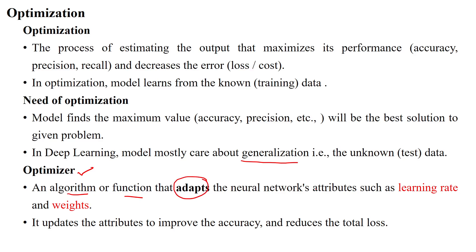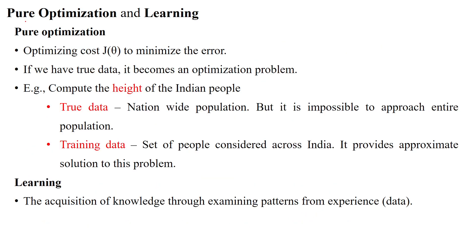The optimizer adapts neural network attributes such as learning rate alpha, weights, and bias. These weights and learning rates are continuously updated for a given number of epochs until we achieve maximum accuracy and precision by decreasing the error. This updating of weights, learning rate, and bias improves the accuracy and decreases the cost. One important term is pure optimization.